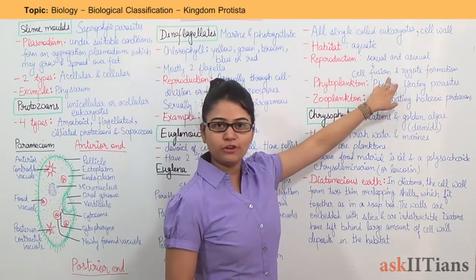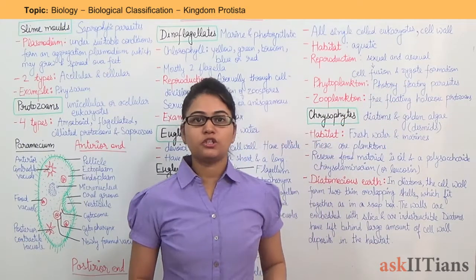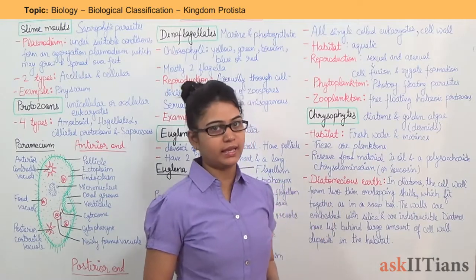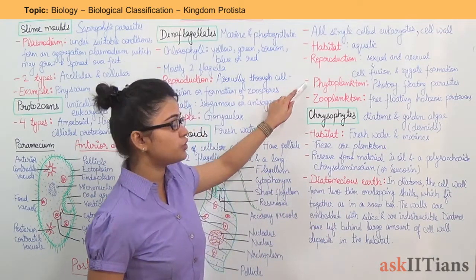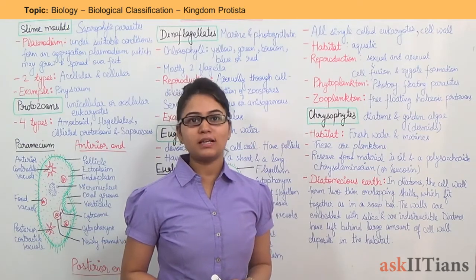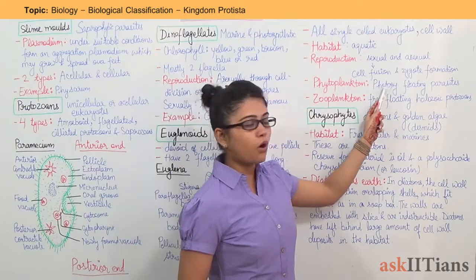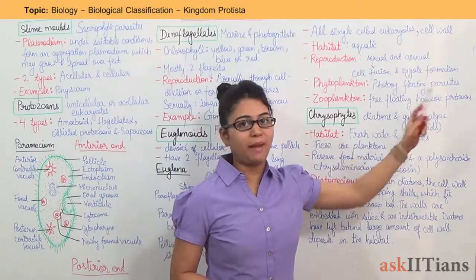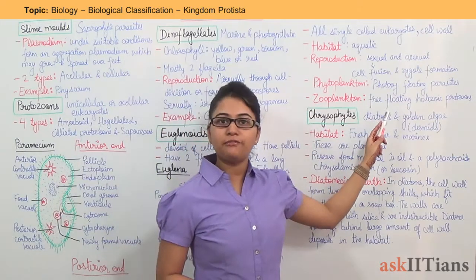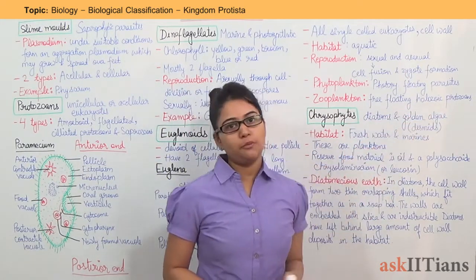The first process is cell fusion and the second one is zygote formation, so two processes are there in the reproduction cycle. There come two terminologies: phytoplankton and zooplankton. Phytoplankton are photosynthetic floating organisms, while zooplankton are free-floating, holozoic protozoans.